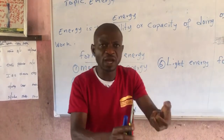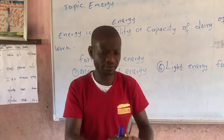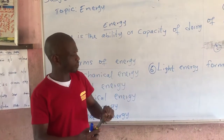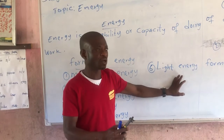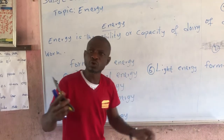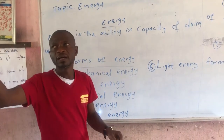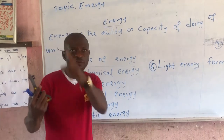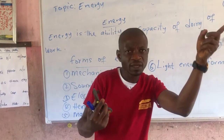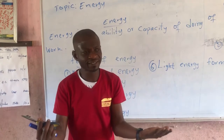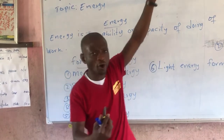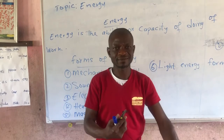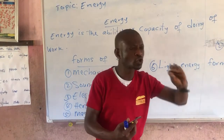This is light energy. Light energy is energy possessed due to electricity reflecting through our bulbs, giving us brightness, or the sun reflecting to the earth — that is what we call sunshine.